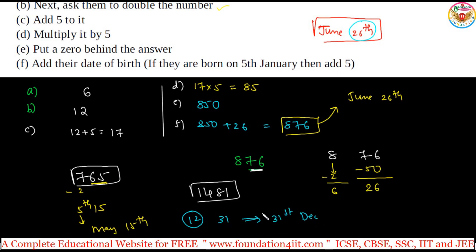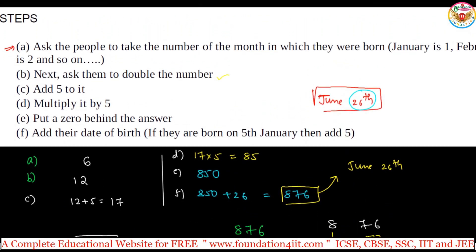This is a simple technique. Just practice this concept once or twice clearly, then ask them step by step and they will tell you their final number. You can directly say the month and date. With knowledge of this technique, you can predict the date of birth of 100 people simultaneously — even 30 members at a time — and directly say the month and date. This is one of the easy techniques I found, so use it.